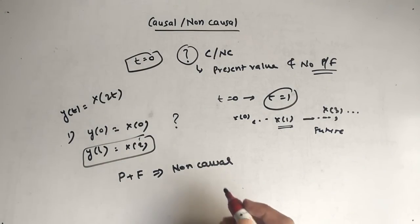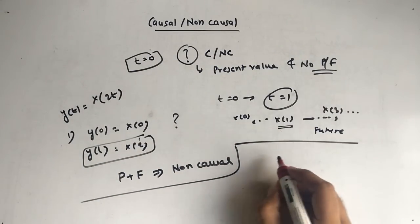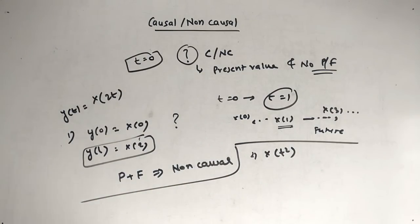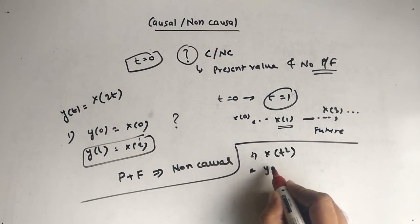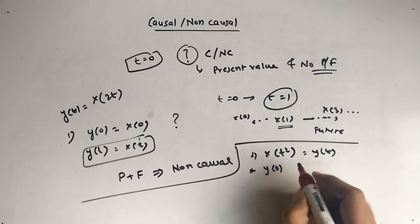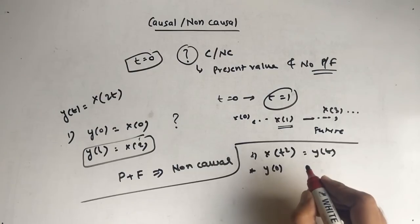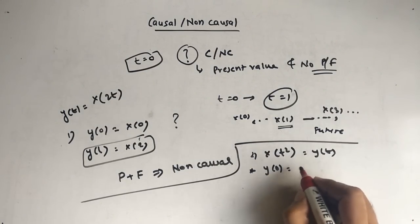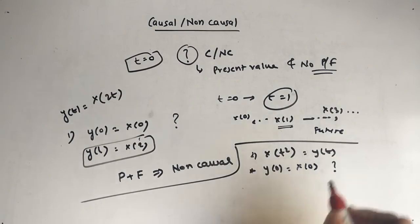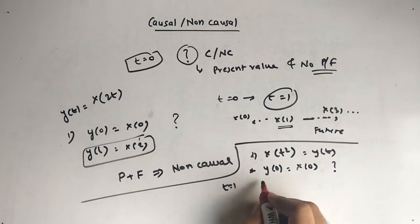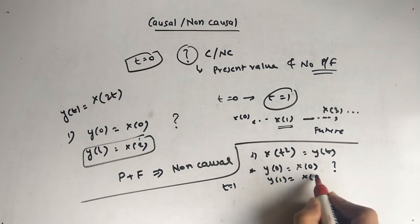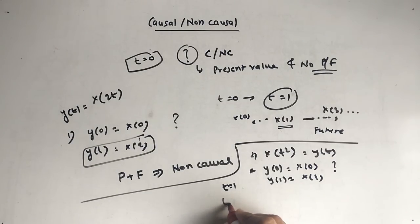Let's take another example: y(t) = x(t²). At t equal to 0, y(0) = x(0) — again the same condition, we're unsure. So put t equal to 1: y(1) = x(1), again we get the same result. There's confusion again about the answer.